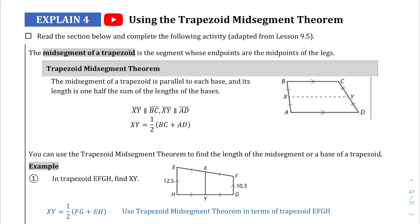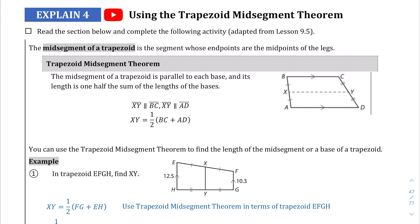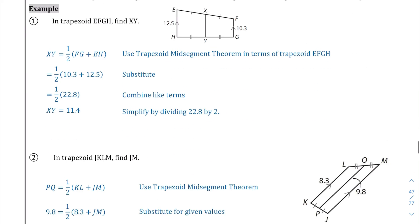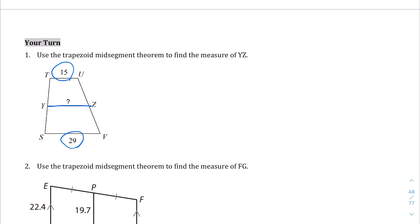Here we are at explain 4 — we're going to be talking about the trapezoid midsegment theorem. This midsegment theorem says that if you were to add the bases and divide by 2, you can get the length of the midsegment. Using the midsegment theorem, we add 15 plus 29 divided by 2: that's 44 divided by 2, which equals 22. So YZ = 22.